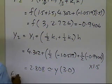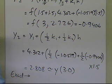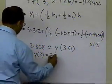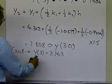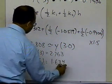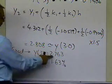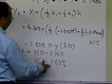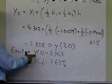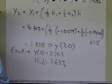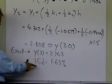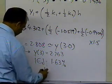The exact value from ordinary differential equations is y at 3 equal to 2.763, to four significant digits, giving an absolute relative true error of 1.63 percent. If you want more accurate results, simply halve the step size to 0.75, which takes four steps, and the relative true error will decrease. That is the end of this segment.